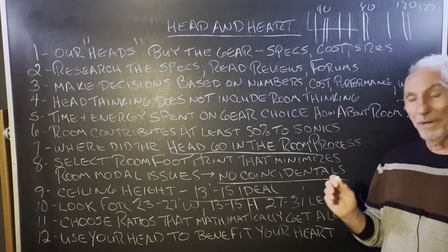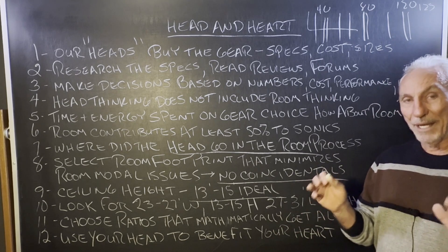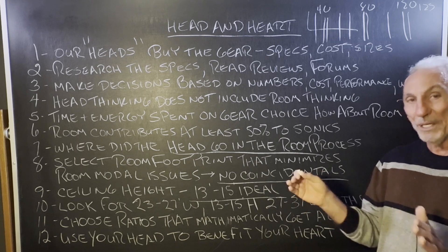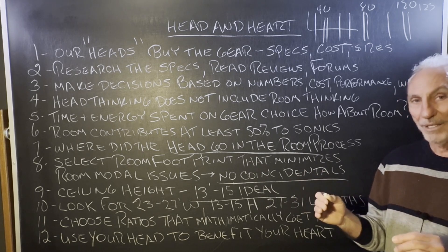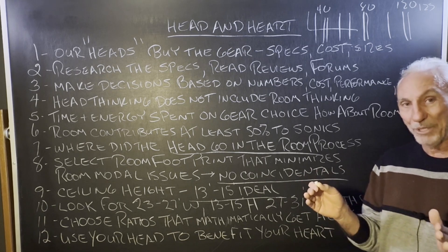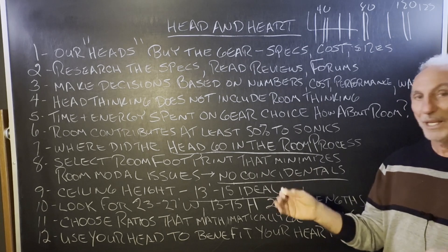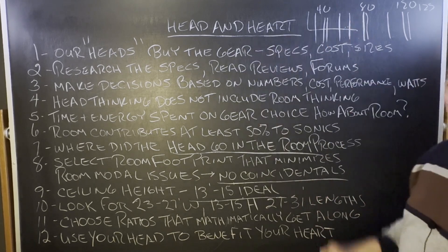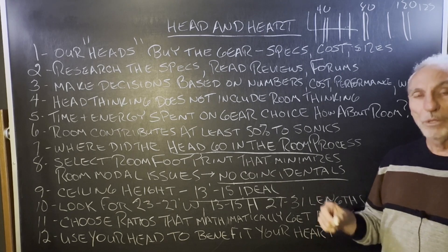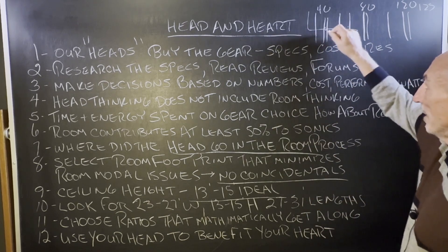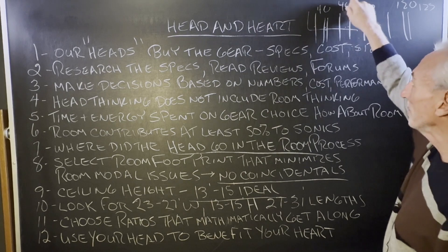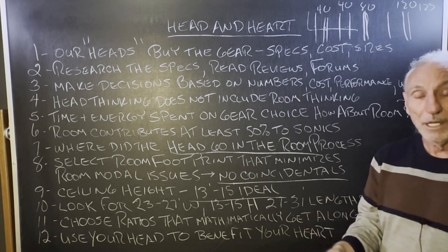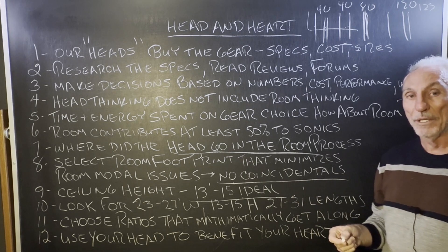You have three variables: width, height, and length, and you have to think in terms of physics — translating the laws of physics into those three numbers. Certain combinations don't matter where they fall among the three dimensions, whether it's ceiling height and width, width and length, or length and ceiling height. You have to get those numbers mathematically compatible so there are no coincidentals and you widen the spaces between modes. All rooms have modes, but if the space between them is 40 hertz, that's treatable. If it's only 10 hertz, it may not be possible to achieve 70, 80, or 90 percent resolution.